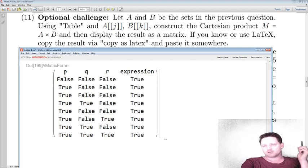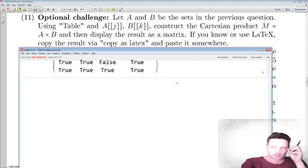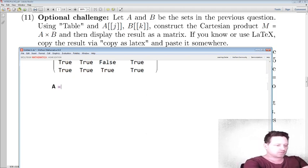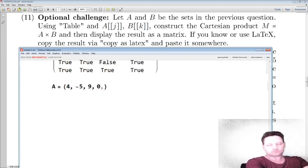So this one, although it says optional challenge, I think it's fairly easy. Let's see what it says. Let A and B be the sets in the previous question. Okay well I'll just make up some new sets. Alright so A equals 4, minus 5, 9, 0, 1, 2, and 7.